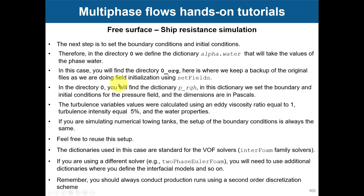Next, go to the zero directory and look at alpha.water, which represents the volume fraction. Notice we are defining the primary phase because the file is named alpha.water.